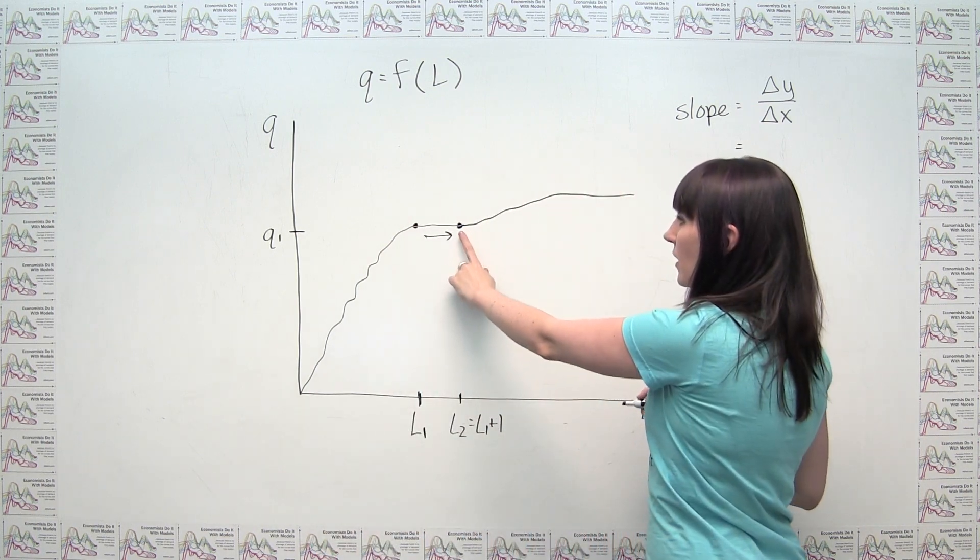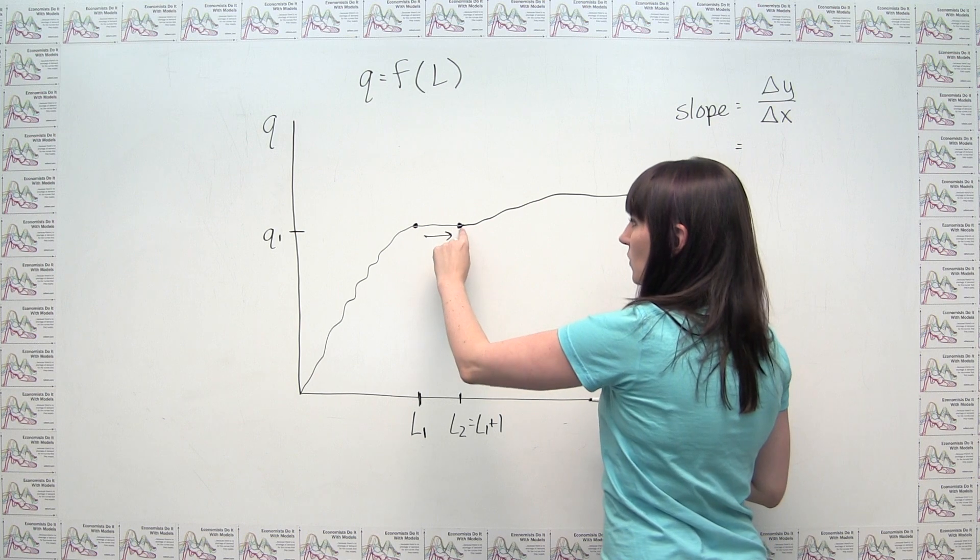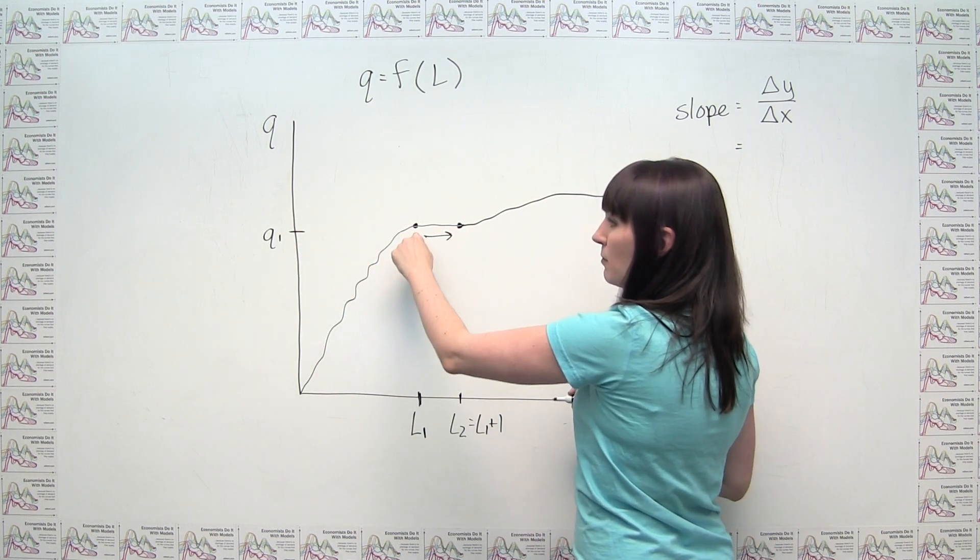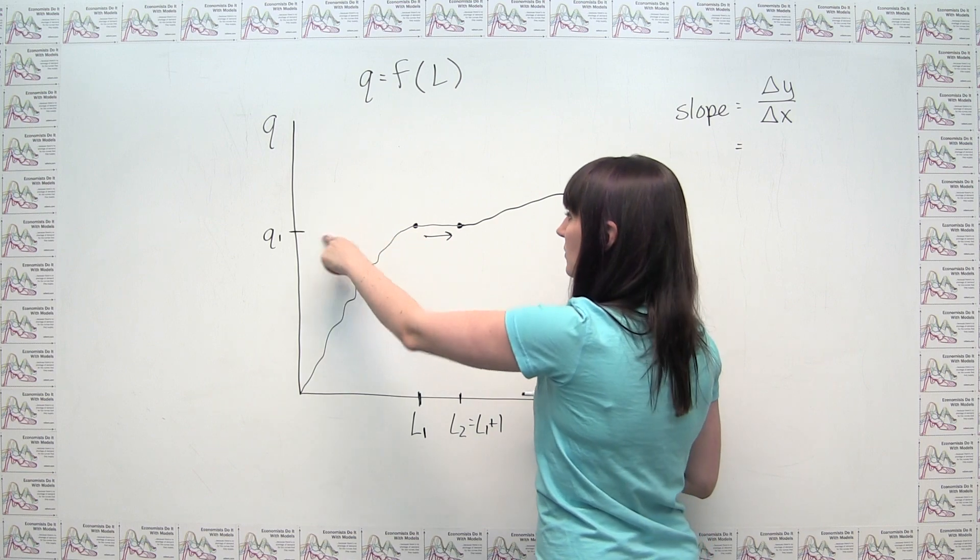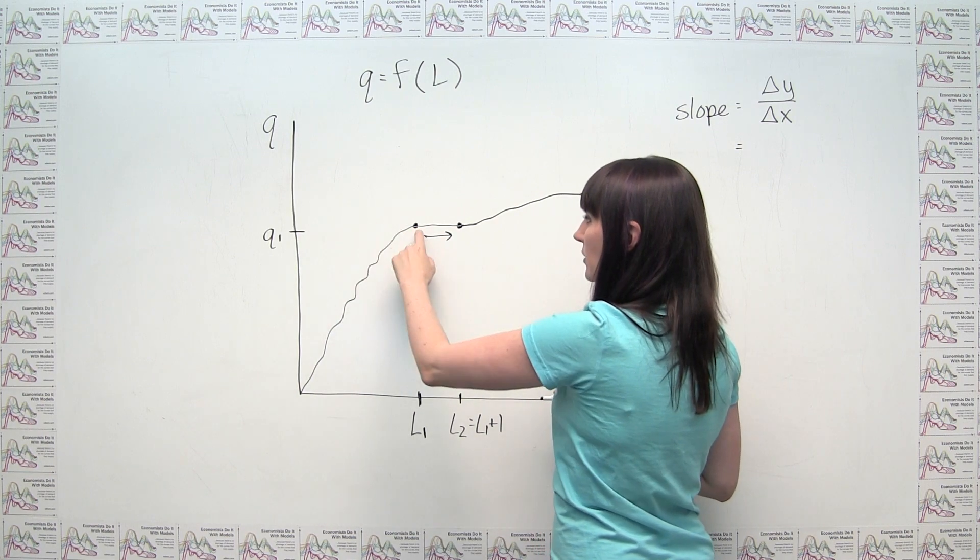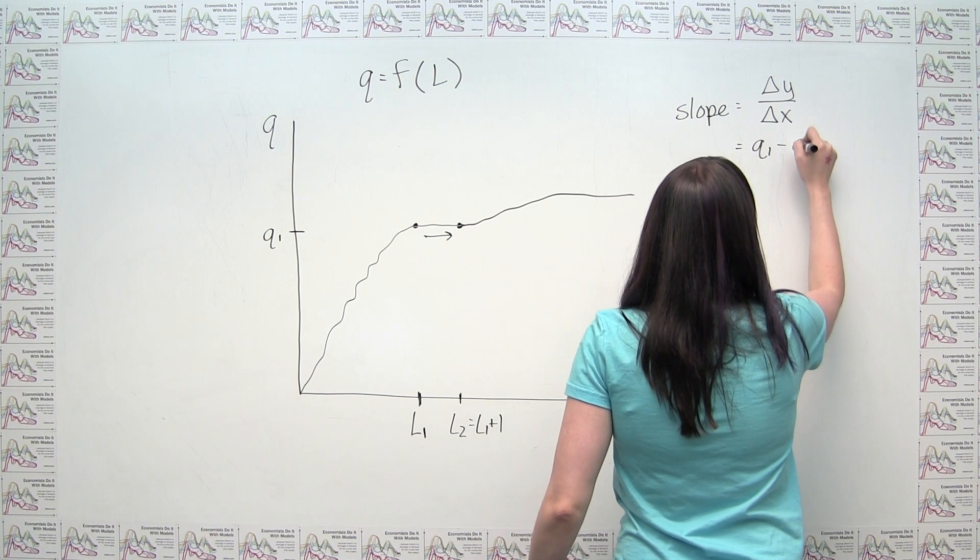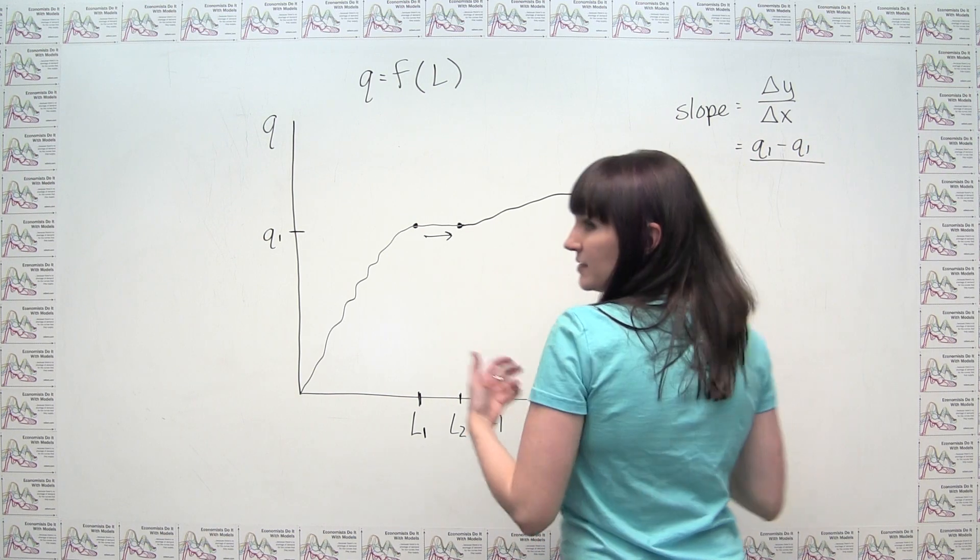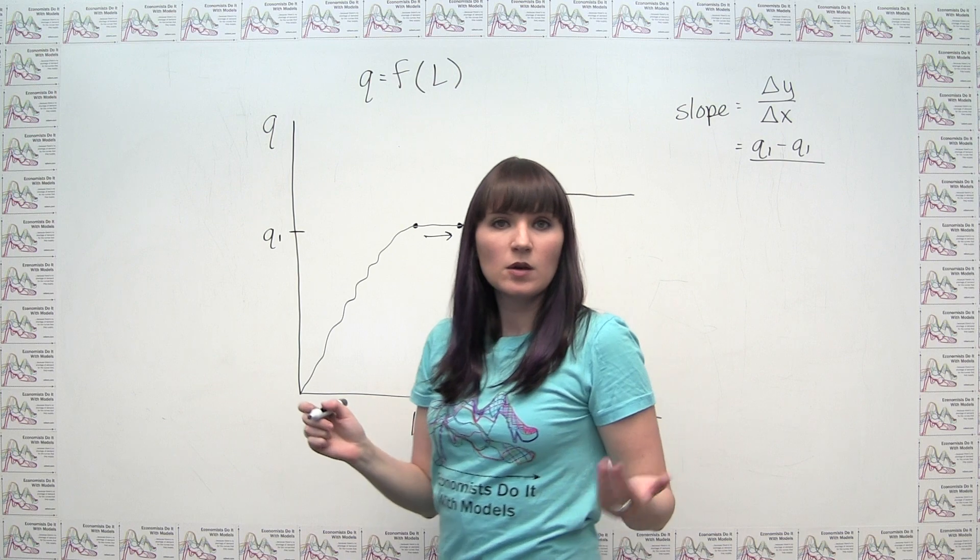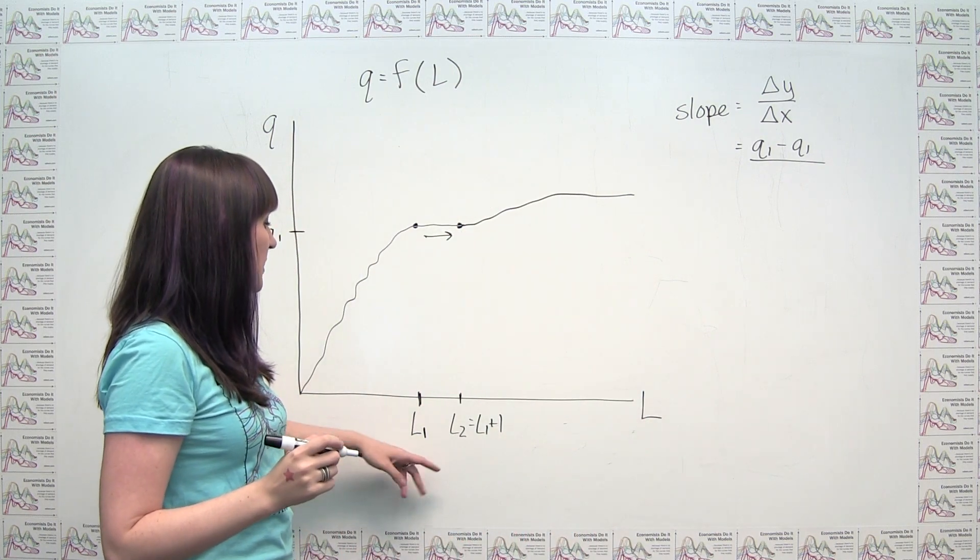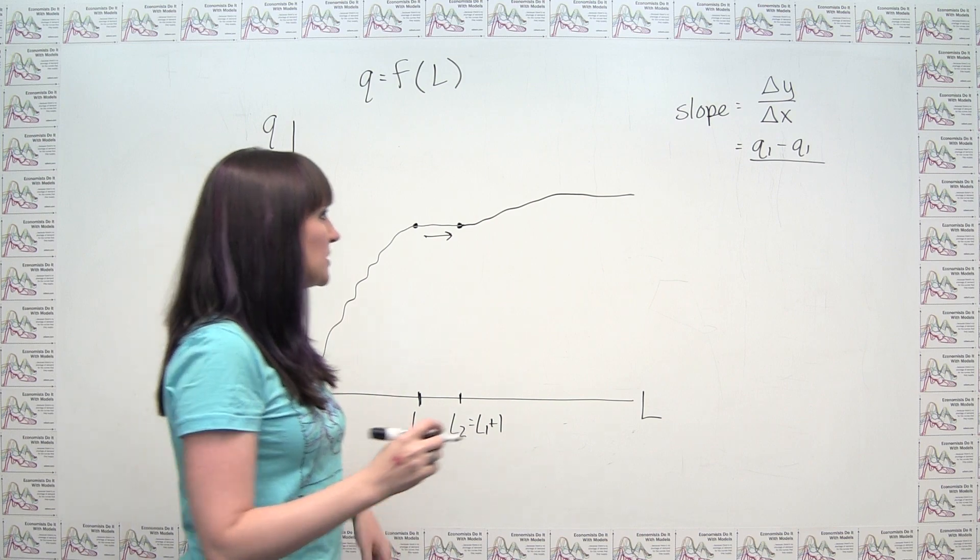Our change in Y would just be Q1, because that's where we are with our Y coordinate here, minus Q1, because that's also our Y coordinate here. So we'd say, oh, Q1 minus Q1. Now you can see where I'm going with this. Well, let's just be complete. And we can say that our change in X is just L2 minus L1.